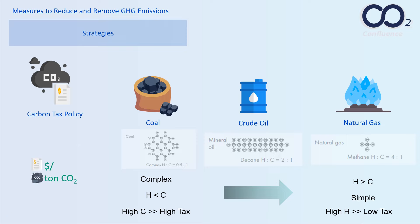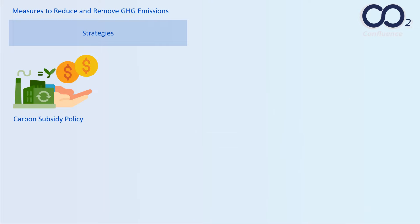This policy applies a specific percent tax to every unit of carbon emitted from an energy source. There is no set limit on emissions; the emitter pays the tax rate on every unit of carbon generated. This provides incentives for producers and consumers alike to reduce energy use and shift to lower-carbon fuels or renewable energy sources through investment or behavior.